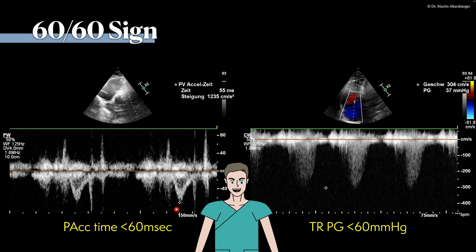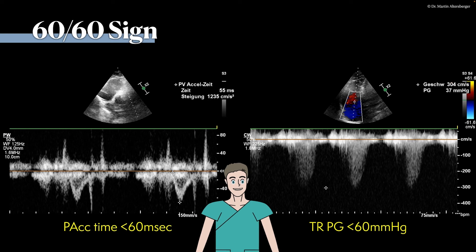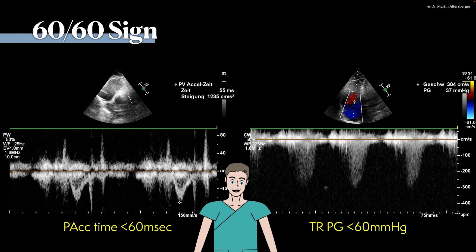So we have one sign highly suggestive of relevant pulmonary hypertension, but when we measure it — assuming no severe or torrential tricuspid regurgitation — the gradient will be plausible and below 60 mmHg. In contrast, in pulmonary hypertension from diffuse parenchymal lung diseases, the gradients will exceed 60 mmHg. If you truly find the pulmonary acceleration time below 60 milliseconds, that is the 60-60 sign.